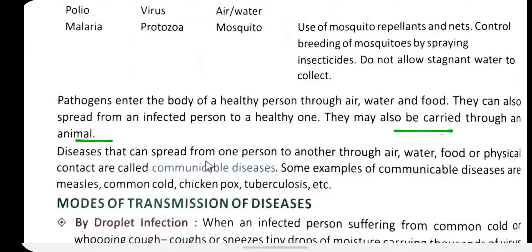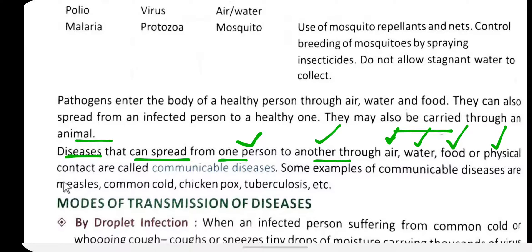Diseases that can spread from one person to another through air, water, food, and physical contact are called communicable diseases. Examples of communicable diseases include measles, chickenpox, tuberculosis, and the common cold.